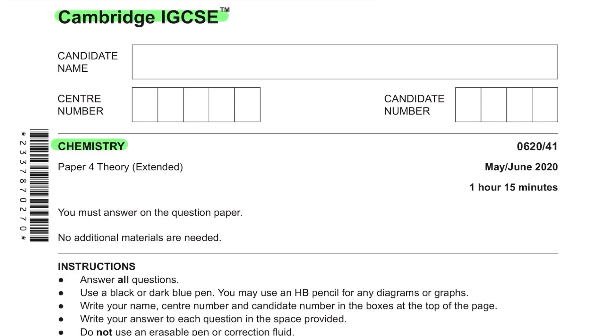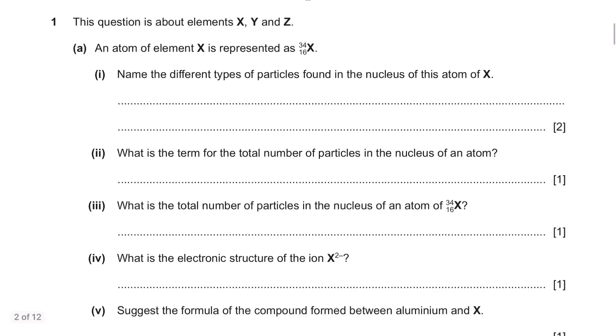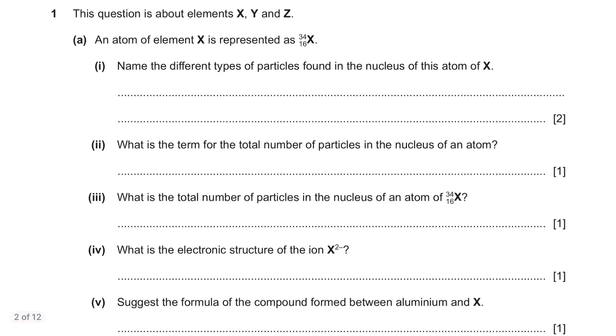Cambridge IGCSE Chemistry Major 2020 Paper 4, Question 1. This question is about elements X, Y and Z.